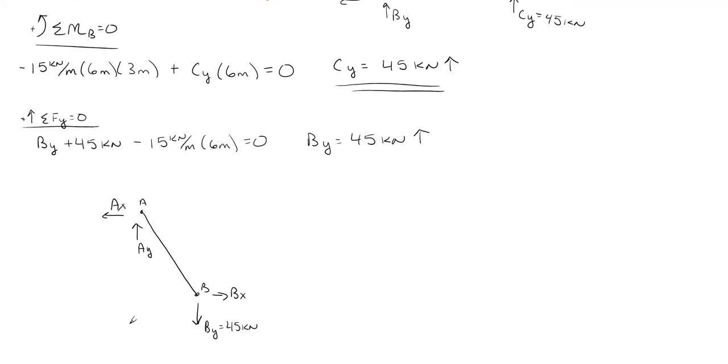So can I find anything here? Yeah, I can find A sub Y. So I can find A sub Y just by summing forces in the vertical direction equal to zero. I will have A sub Y going upward, subtracting off my B sub Y, which is 45 kilonewtons. I don't have any other force acting on this member from A to B in the vertical direction. So A sub Y is just simply 45 kilonewtons in the upward direction.